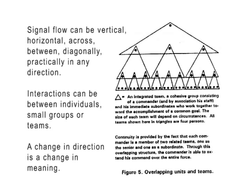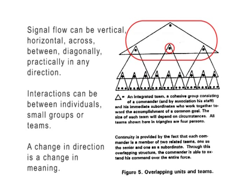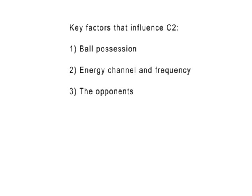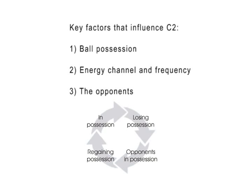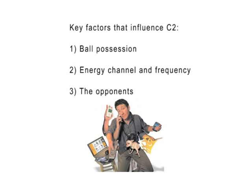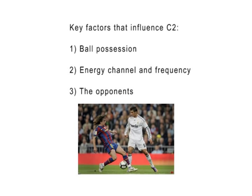Not only are players a part of different systems, but they also carry different orientations within these systems. A player who is a commander in one is a subordinate in another, and even this changes in the flow of the game. Three of the main factors in framing C2 orientation are ball possession, the four main moments, which energy channel and frequency the player attends to, and the opponents.